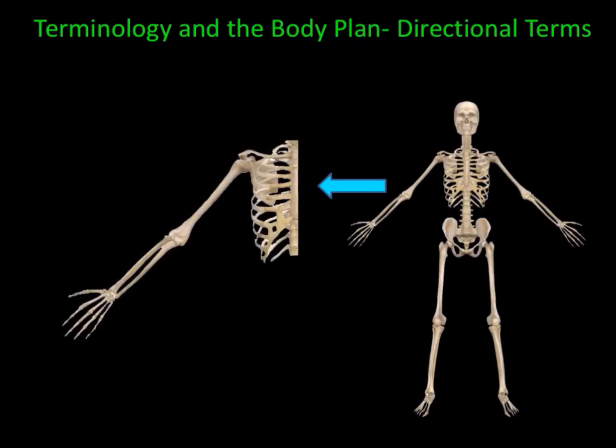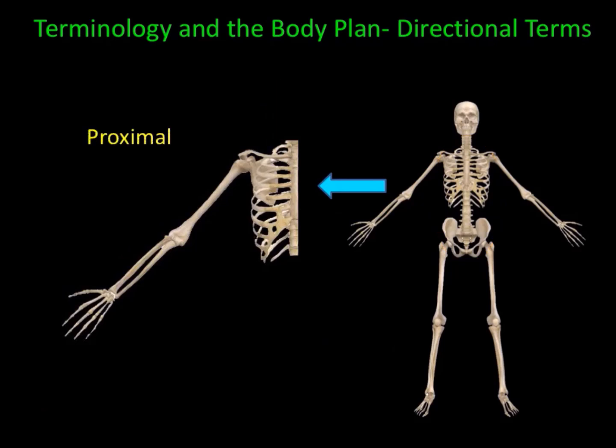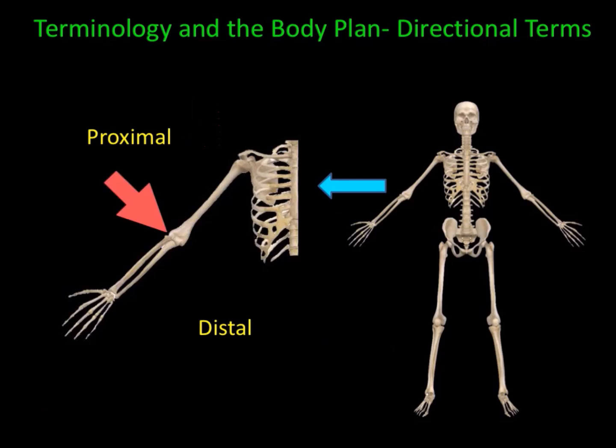The next set of terms describe how close or how far away a structure is in reference to the trunk. Closest to the trunk is proximal. Furthest away from the trunk is distal. For example, the shoulder is proximal to the elbow, and the elbow is proximal to the wrist.